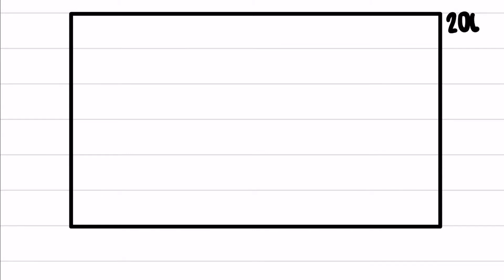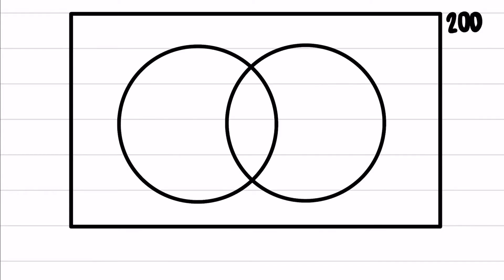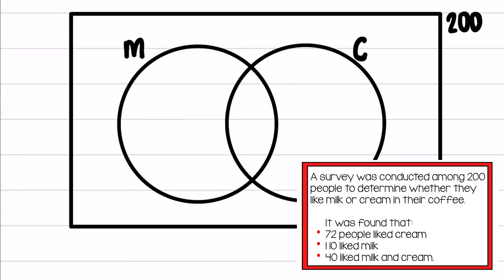Our Venn diagram is going to be a rectangular block that is our sample space. Outside we list 200 because within that entire rectangle there needs to be 200 people. We are comparing milk and cream and we know there is an overlap, so we draw two overlapping circles. The information given says 72 people liked cream and 110 liked milk, so we put 72 by cream and 110 by milk.